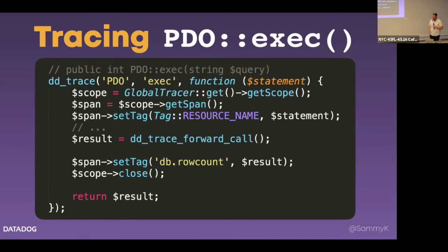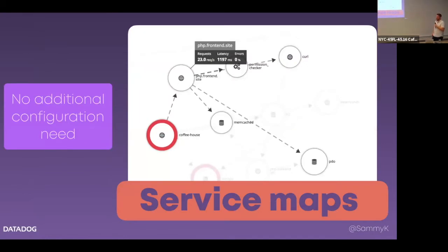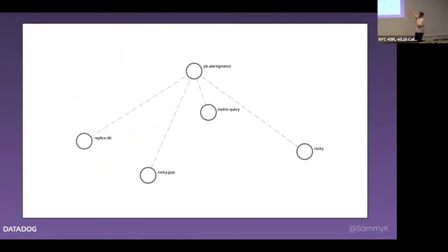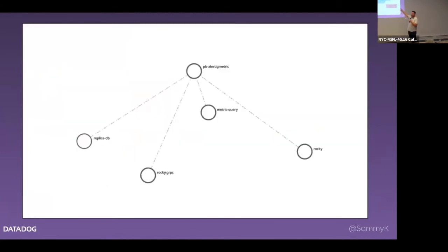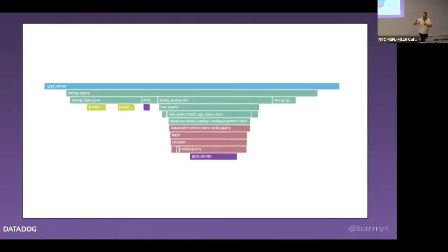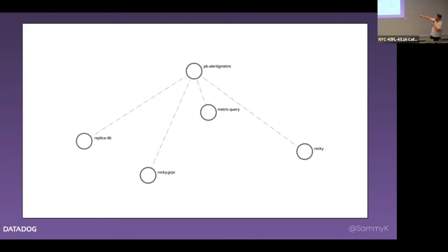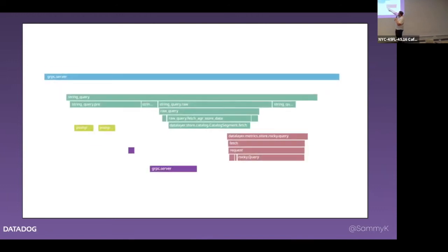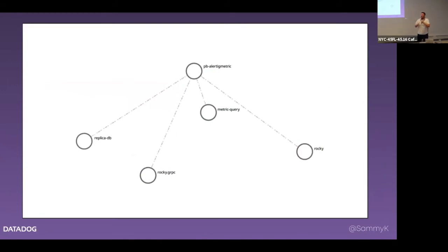Question about the different services and microservices — how does it know that a call in another process is handled by the same trace? All of this is generated based on the trace data that comes in. When a trace comes in, each span has a definition of what service it's related to, so it's able to look at all that data and generate the service map based on how these spans are related. For example, a top-level blue span would be the parent, and the green ones underneath would say their parent span is the blue one — it makes those correlations that way.